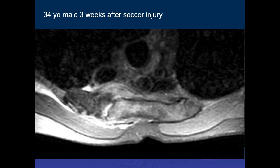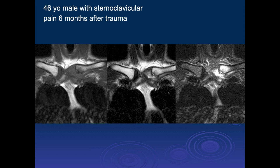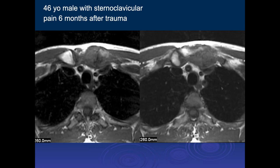You can see trabecular contusion involving the sternum itself — this is an area that can often be quite painful. Here's the axial image going through that same area. It's been painful for a long time. A 46-year-old male with sternoclavicular pain six months after trauma. There's a lot of edema in the proximal aspect of the left clavicle and probably at least partial dislocation of the sternoclavicular joint with significant surrounding edema and capsular thickening. We need to look at the posterior vasculature — I don't see a big mediastinal hematoma.